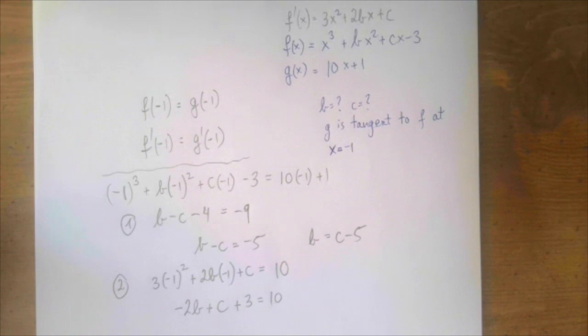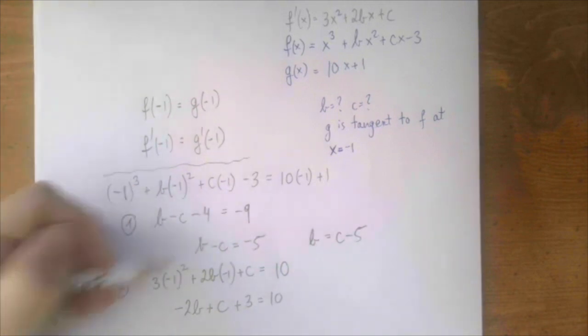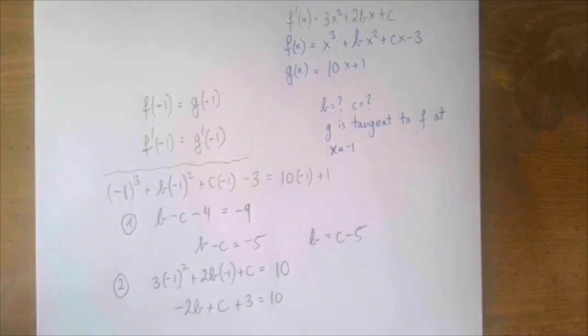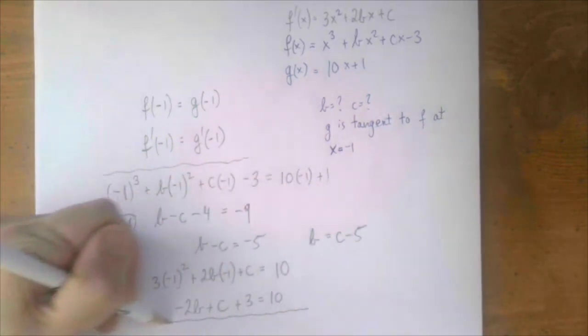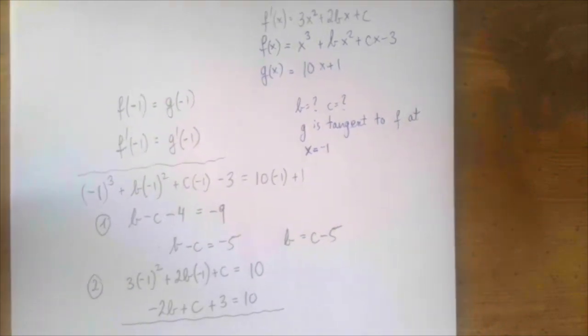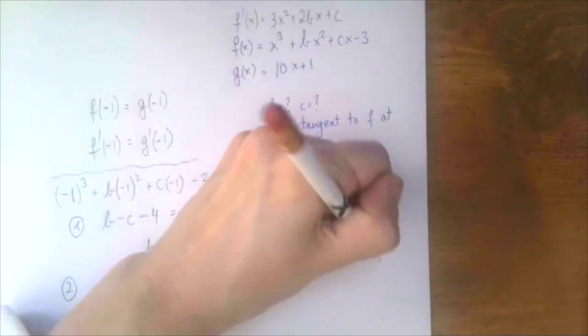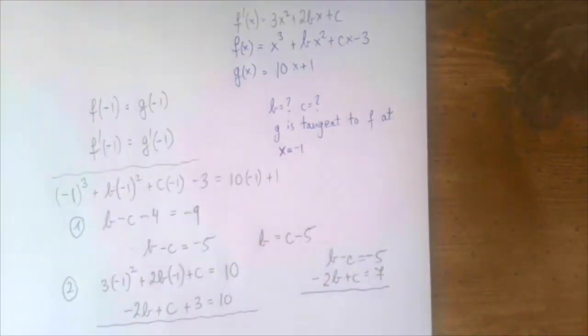I'll add the two equations as is because that would cancel out c. This system lends itself to elimination nicely. We have b - c = -5 and -2b + c = 7.